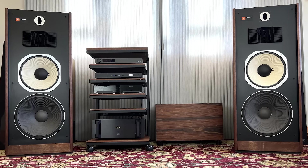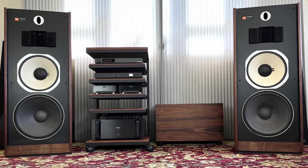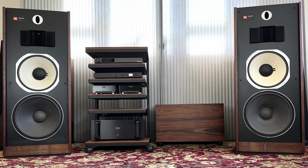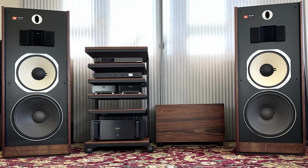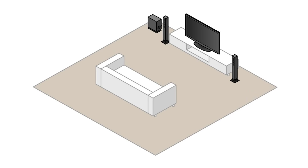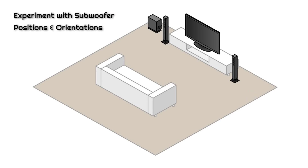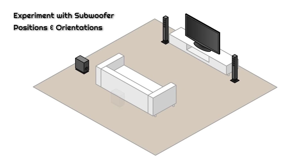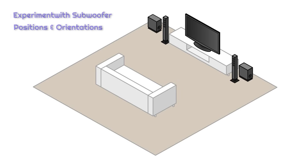Generally, subwoofers can be placed against the rear wall beside the main full-range speakers, pulled out for imaging purposes. Before proceeding with tuning, it's a good idea to experiment with various subwoofer positions and orientations depending on aesthetic and room limitations. By using REW, you can see in real time the effects of changes in position. Regardless of where the subwoofers end up, their location can be compensated for in either a 2.1 or 2.2 system by adjusting the relative amplitude and/or delay between the various speakers.